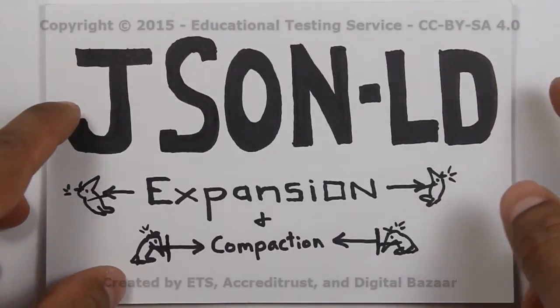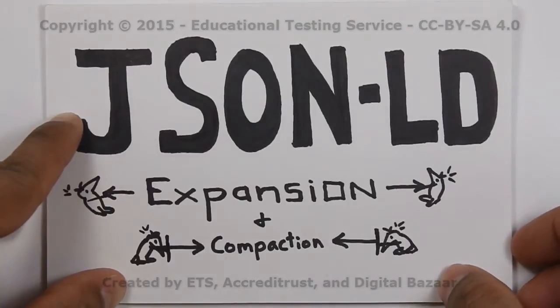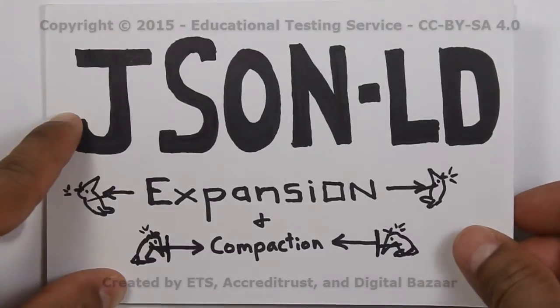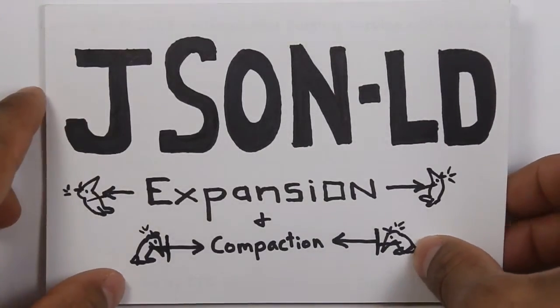This is an overview of JSON-LD's expansion and compaction algorithms. Expansion and compaction are some of the most important features in JSON-LD, and this tutorial is designed to give you a quick overview of how those features work.